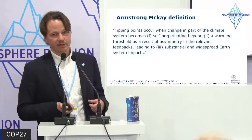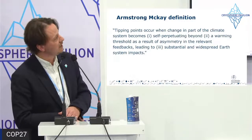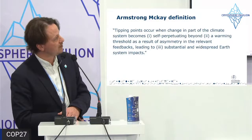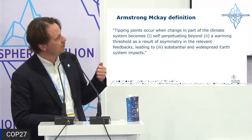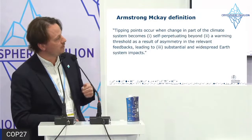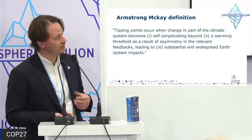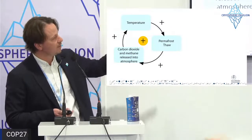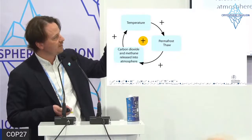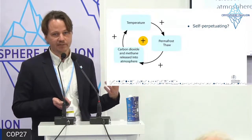Carbon cycling is rather slow at high latitudes compared to the tropics, but the magnitude over long time is immense because of this massive stored carbon pool. Returning to the McKay et al. definition: tipping points in the climate system occur when change in part of the climate system becomes (1) self-perpetuating, (2) beyond a certain threshold, leading to (3) substantial and widespread Earth system impacts. The feedback is permafrost thaw emitting methane and CO2, leading to more temperature rise.